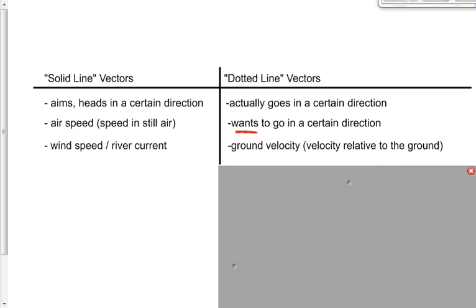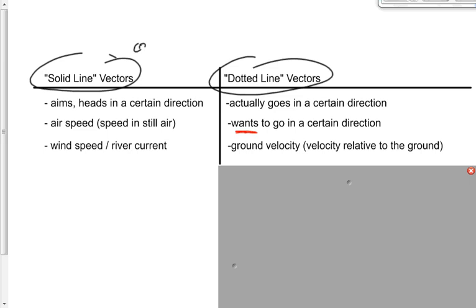Another solid line vector would be the ground velocity — the velocity of the boat, ship, plane, or car relative to the ground. It's important to keep solid and dotted line vectors straight because they allow us to draw simple three-vector right-angled triangle vector diagrams. Get those right and the rest of the problem is easy.